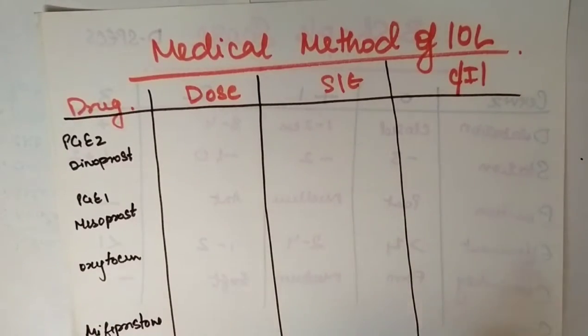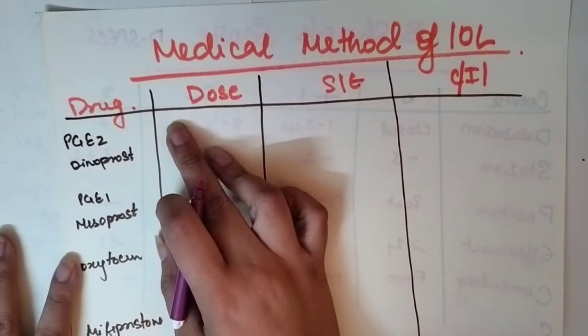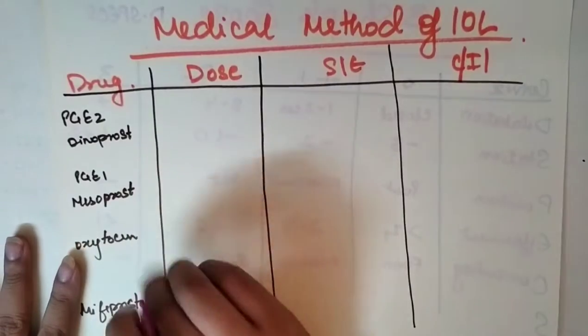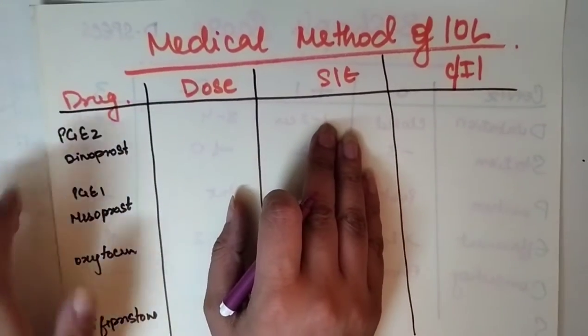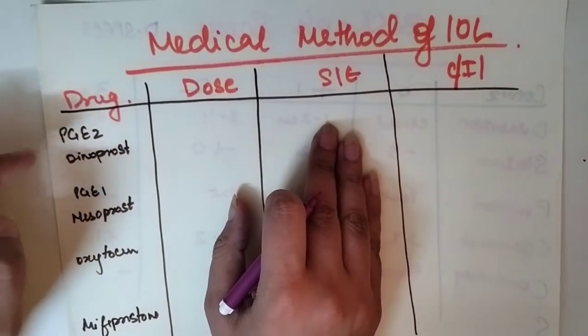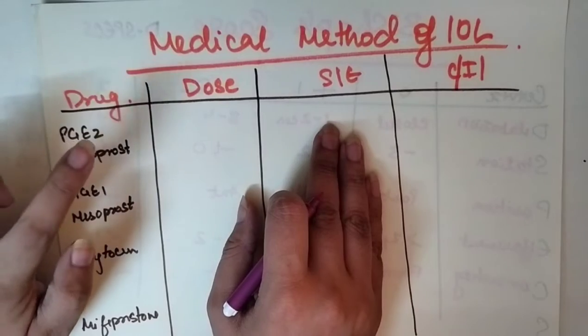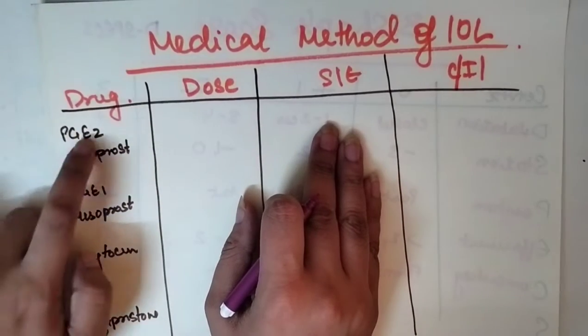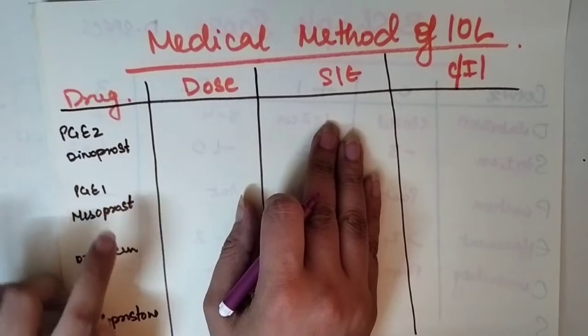Medical methods of induction of labor. We all know that we use prostaglandins, oxytocin, and mifepristone. So first drug is dinoprostone. How can you remember that PGE2 is dinoprostone and PGE1 is misoprostol?